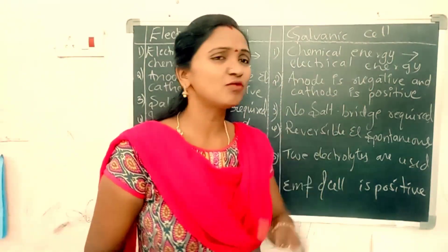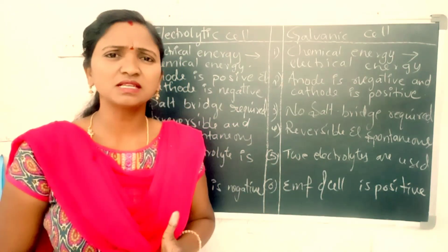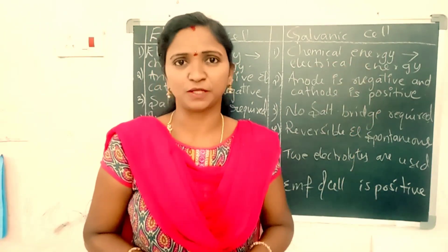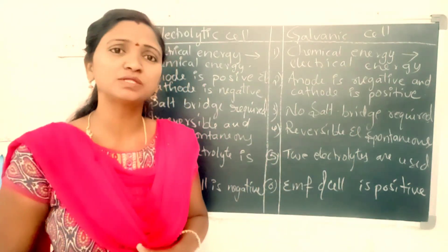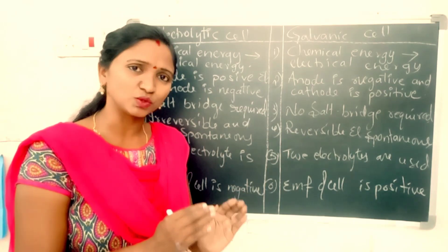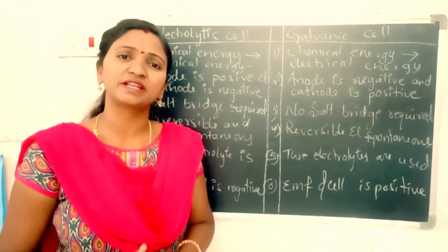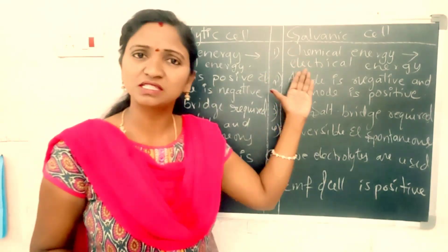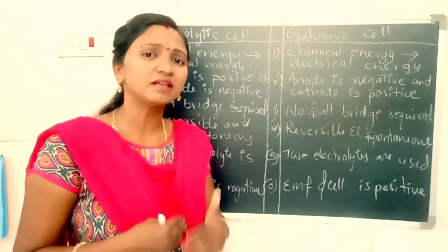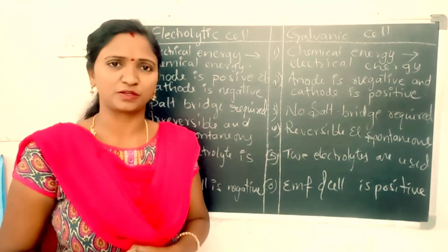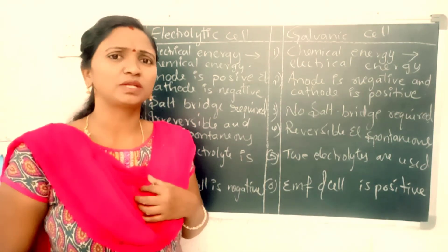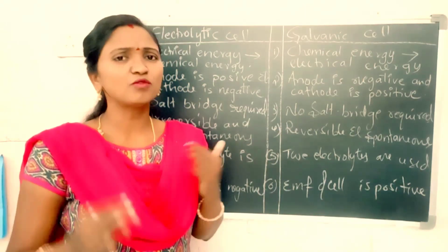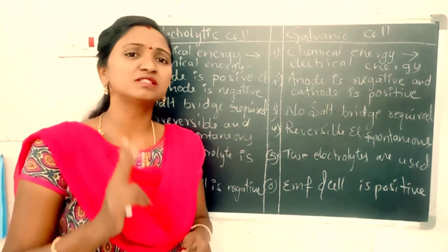Galvanic cells are used to convert chemical energy into electrical energy. The galvanic cell is made up of two half cells. Chemical reactions occurring in these half cells produce electrical energy.